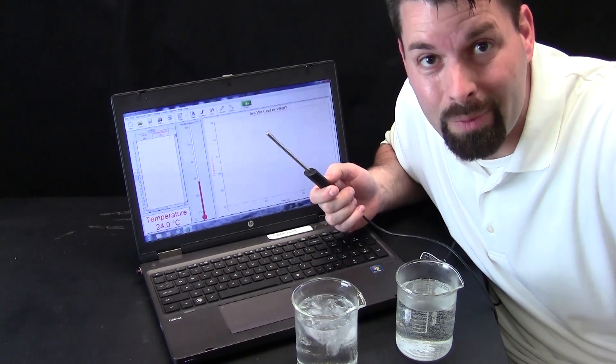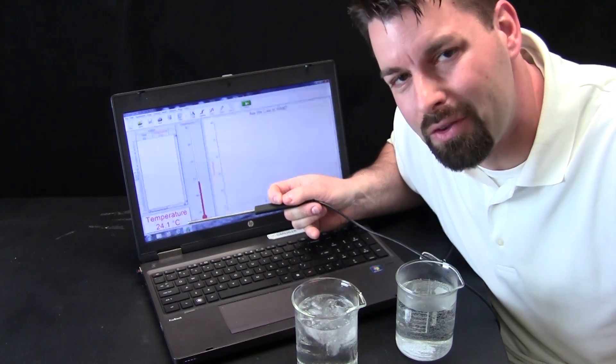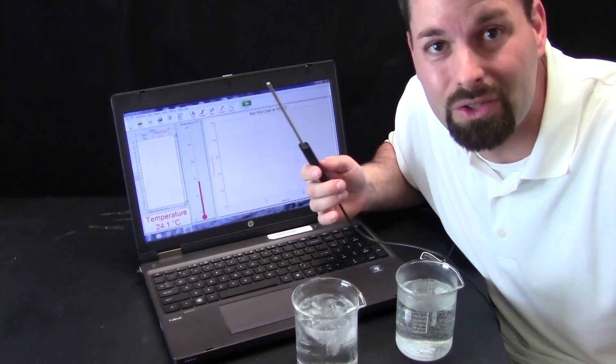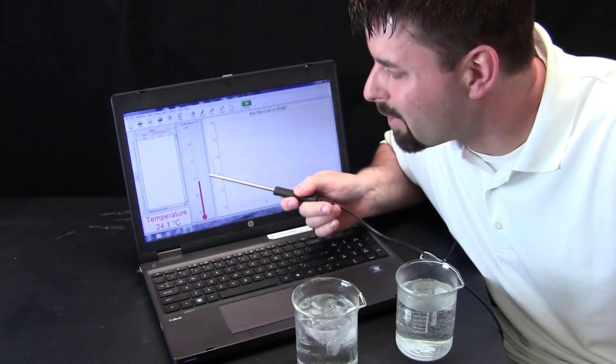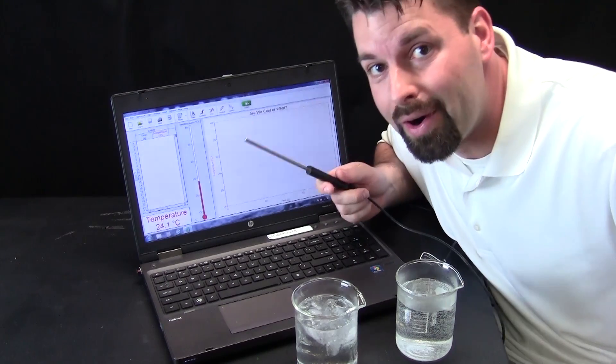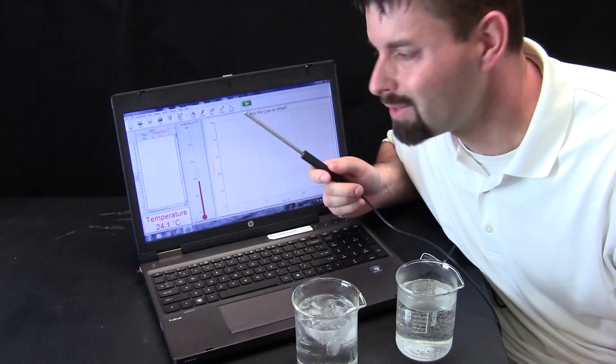So what is so neat about this thermometer? Well, it gives me a temperature reading right here in Celsius, 24 degrees Celsius, which is about 72, 73 degrees Fahrenheit. And it also gives me a virtual thermometer. And the cool part is it allows me to collect temperatures, which is what we are going to do in a few seconds.